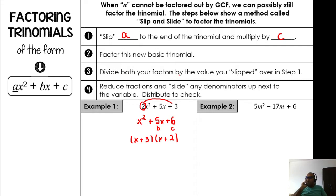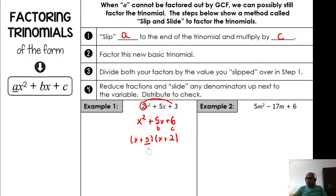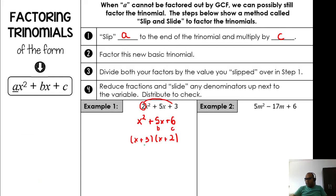Step three: divide both factors by the value we slipped, which was 2. So divide by 2 here and divide by 2 here. I'll change the color to show this step. Now reduce the fractions: 2 divided by 2 is 1, so one factor becomes (x + 1). For 3 over 2, I cannot reduce, so I slide the 2 up next to the variable.